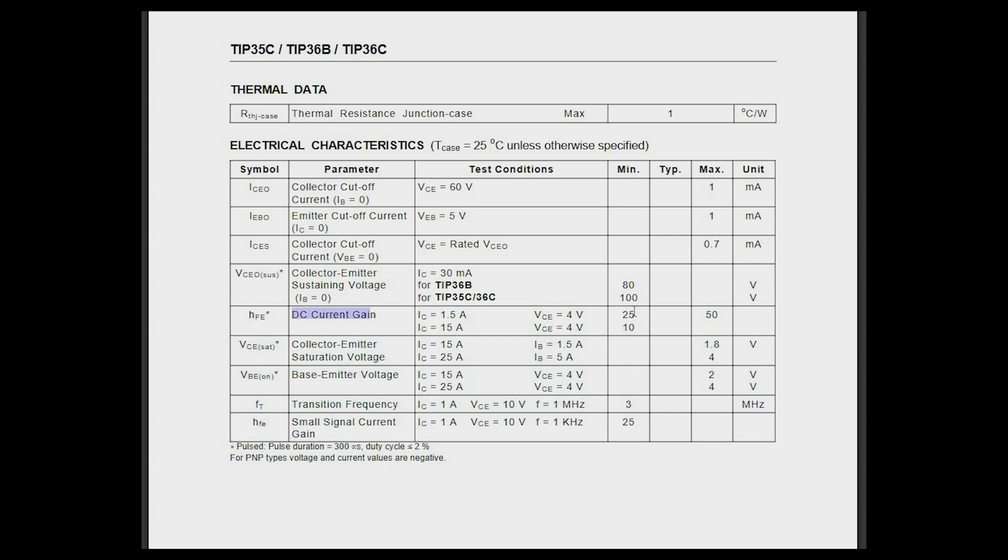That means totally we can get the 30 amps through this transistor. And here we can see that this transistor can provide us the current gate from 10 to 50 times.